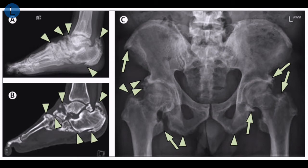The arrows marked indicate prominent areas of enthesopathy, also called enthesophytes. This occurs with bony proliferation of the insertion sites of tendons and ligaments.